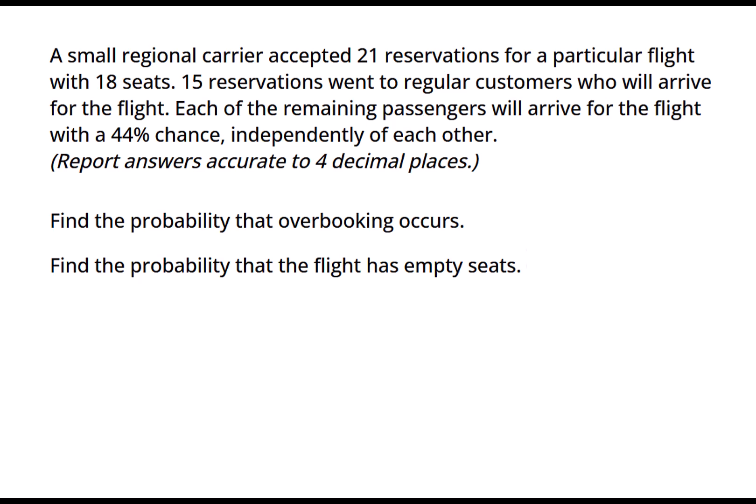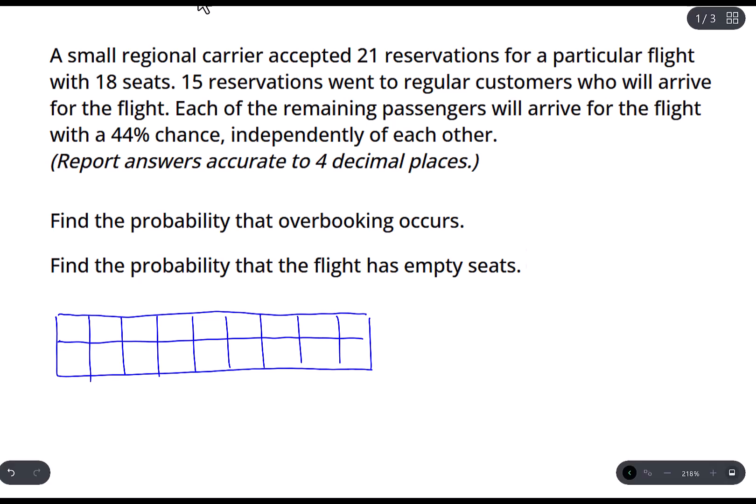We have a flight with 18 seats. Let me sketch out what that might look like. Here's my plane - there's 18 seats in this plane. Now, one thing that is important - 15 reservations went to regular customers who will arrive for the flight. So let's just assume they're already there. So 15 people are already there: 1, 2, 3, 4, 5, 6, 7, 8, 9, 10, 11, 12, 13, 14, 15.